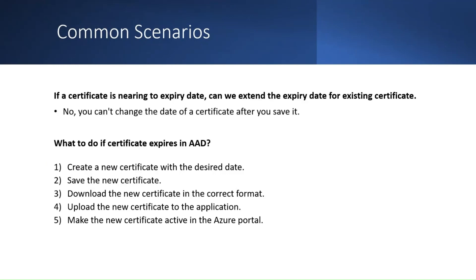In another scenario, the owner of an application finds out the certificate is nearing the expiry date. Can the application owner extend the expiry date for the existing certificate? No, currently this is not possible. When the certificate is expired in AAD, because you cannot change the date of a certificate after you save it, you have to create a new certificate with the desired date, save the new certificate, download the new certificate in the right format, upload the new certificate in the application, and make the new certificate active in Azure portal.